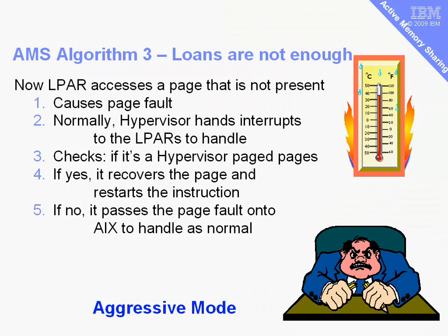What happens when a logical partition accesses a memory page that's not present because it's been stolen by AMS and put on the VIO server paging spaces? Normally the hypervisor handles the interrupts for page faults and then hands them to the logical partition involved. Before handing them on, it checks: is this a page that the hypervisor itself has paged out? If yes, it asks the VIO server to recover the page and put it back into memory, then restarts the instruction that caused the page fault. If it isn't a page the hypervisor stole, then it's something to do with the page fault in the actual copy of AIX running, and it passes the page fault onto AIX which handles the paging algorithm as normal.